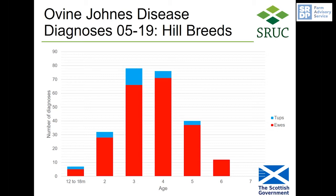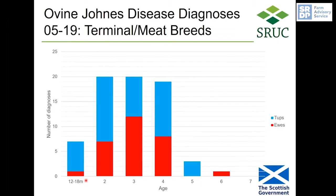Looking at diagnosis data over a 15-year period in hill breed sheep, the peak numbers of diagnoses occur in animals between the ages of three and four. The red columns are diagnoses in ewes and the blue columns are diagnoses in tups, though you do get clinical disease in some quite young sheep. For terminal breeds and meat sires, we see more tups — possibly because of higher value animals — with peak ages at two, three and four, but again some diagnoses in animals down to about one year of age.